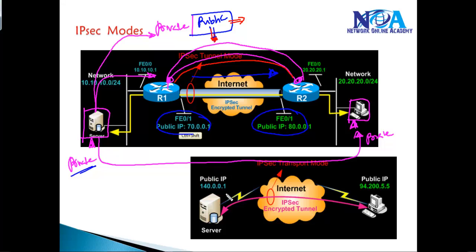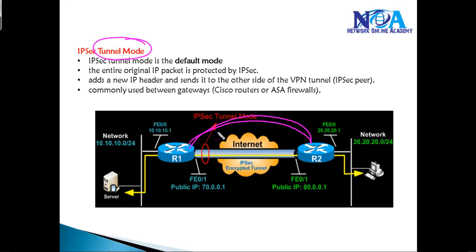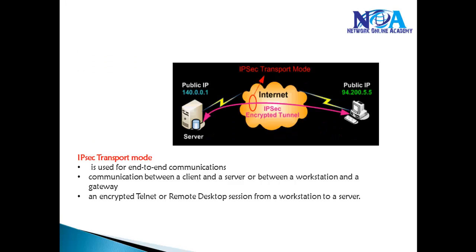In transport mode, there is no extra IP header information added — it goes with the same IP addresses. There is no additional header added in transport mode. Tunnel mode is the most commonly used mode when connecting point-to-point between routers or in site-to-site VPNs between a router and a firewall, where the entire original packet is protected by IPSec. The actual forwarding happens based on the extra IP header added at the router.